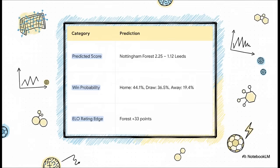Right, so Spectra came out swinging with a really confident prediction. It wasn't just kind of leaning towards Forest, it gave them a whopping 44% chance of winning, which is more than double Leeds' shot. It even projected a scoreline somewhere around 2-1. And that ELO rating edge, that's basically a power ranking and a plus 33 advantage, is significant. This was a clear, decisive call from the AI. No sitting on the fence here.